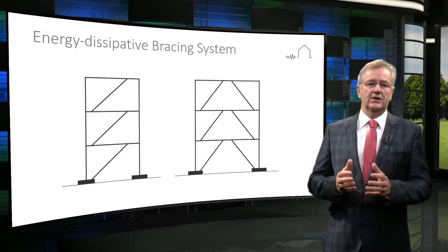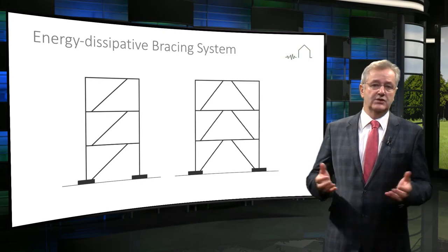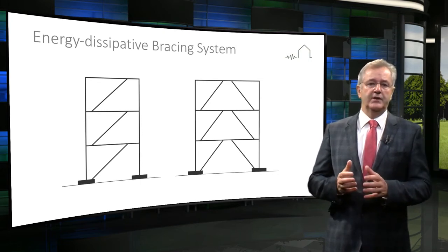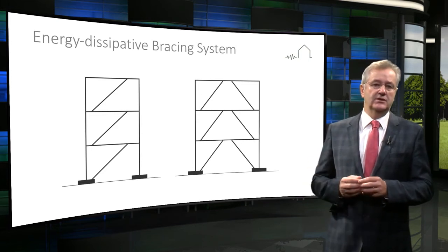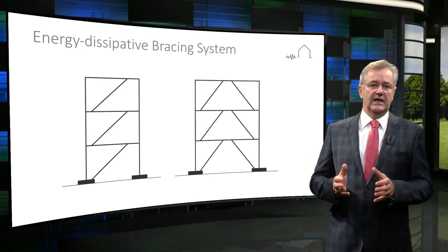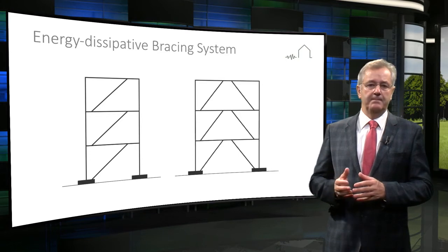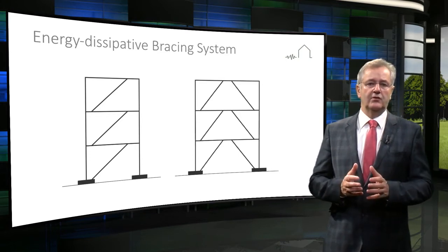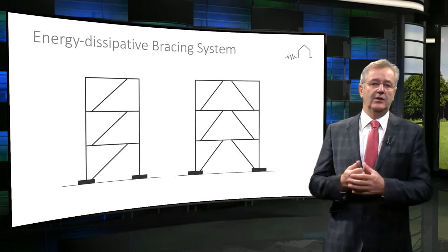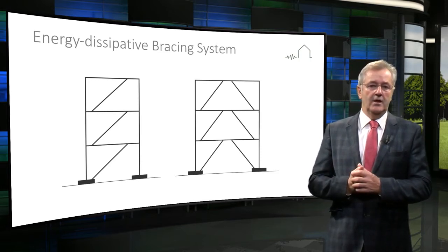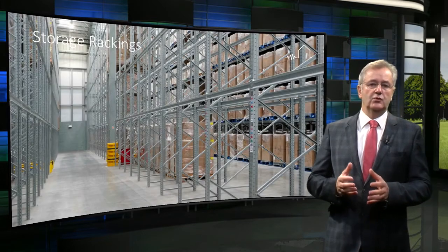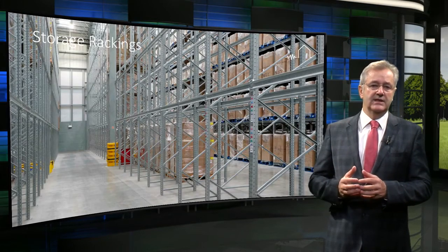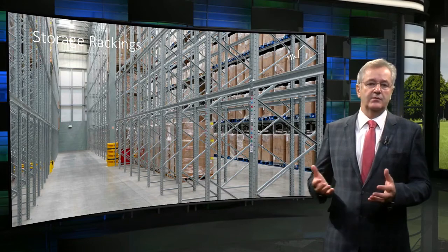Structures designed for vertical loading only, such as storage racking, are often braced in the short direction and unbraced in the length direction. These structures are designed to take vertical loading and the horizontal component of the vertical loading resulting from the imperfections in the verticality of the structure. For storage racking, the procedure to evaluate the earthquake resistance is similar to that of other frame structures.